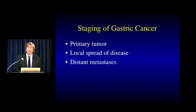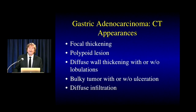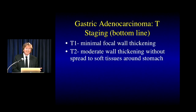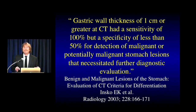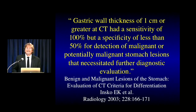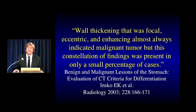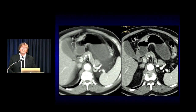Our accuracy of staging depends on CT protocol and interpretation. When we look at CT, we talk about the primary tumor, local spread, and distant metastasis. Gastric adenocarcinoma can range from focal thickening to polypoid lesions to bulky lesions with or without ulceration. We stage tumors from T1 (minimal wall thickening) through T2 (moderate), T3 (wall thickening with perigastric spread), to T4 (infiltration). If wall thickening is focal, eccentric, and enhancing, it almost always means malignancy. A well-distended stomach with gastric wall of a centimeter or greater has 100% sensitivity but less than 50% specificity, because you pick up a lot of inflammatory lesions.